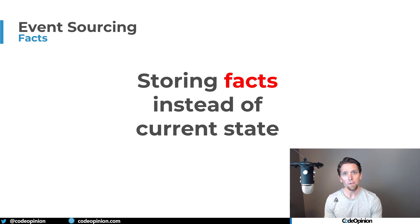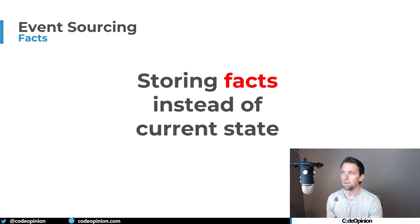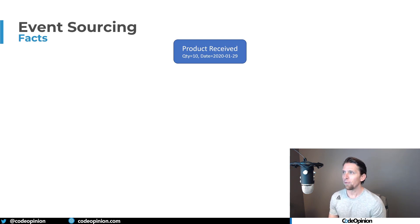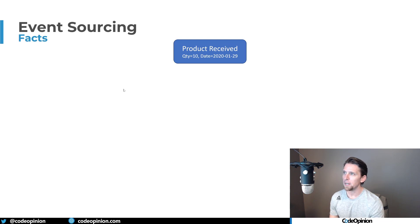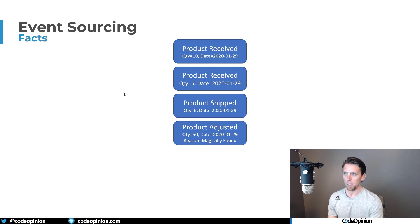I've covered what event sourcing is in another video — check the link in the description. But to go over it quickly: the idea of event sourcing is that you're storing facts instead of current state. You're storing things that have occurred within the system in an event stream that you can then derive current state from. So if we're talking about a product in a warehouse, instead of having a record that just represents the product, we're recording all the different things that happen to that unique product — received 10 units on a particular date, then five more, then shipped six out, then did a product adjustment. We're recording all the facts, the events in an event stream, as opposed to recording current state.